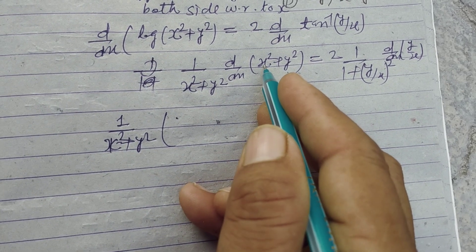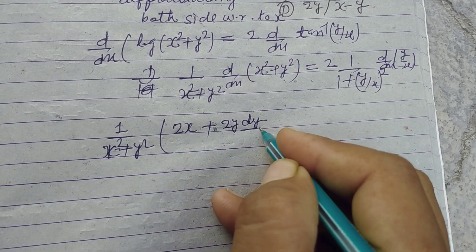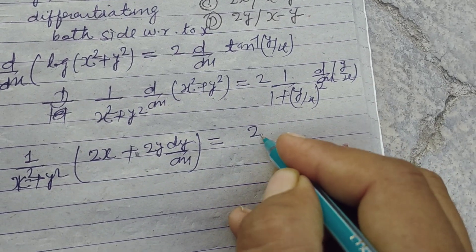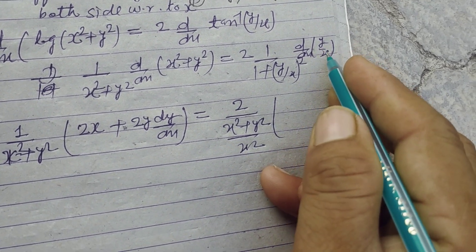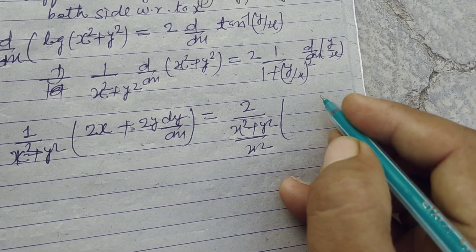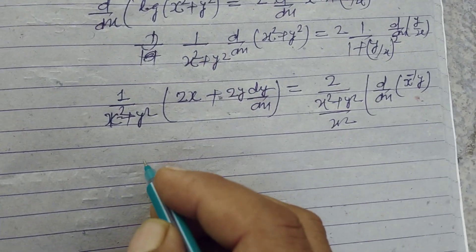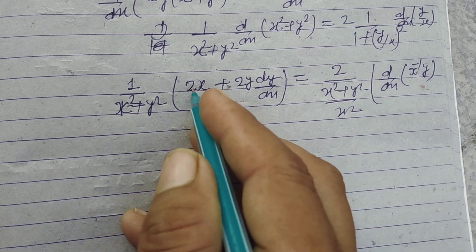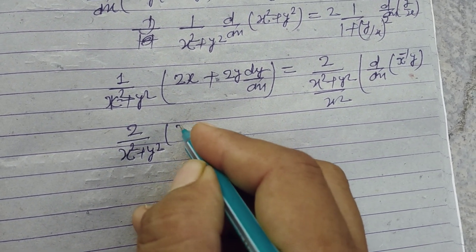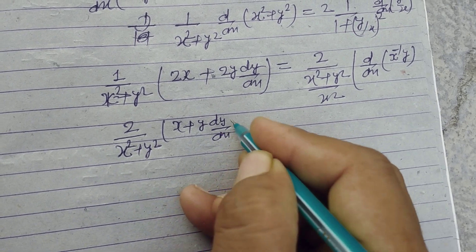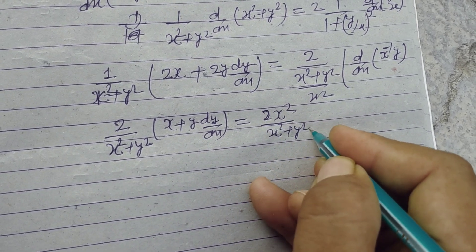So on the left side: 1/(x² + y²) times the differentiation of (x² + y²), which gives 2x + 2y·dy/dx. Taking 2 common: 2/(x² + y²) times (x + y·dy/dx) equals 2x²/(x² + y²) on the right.